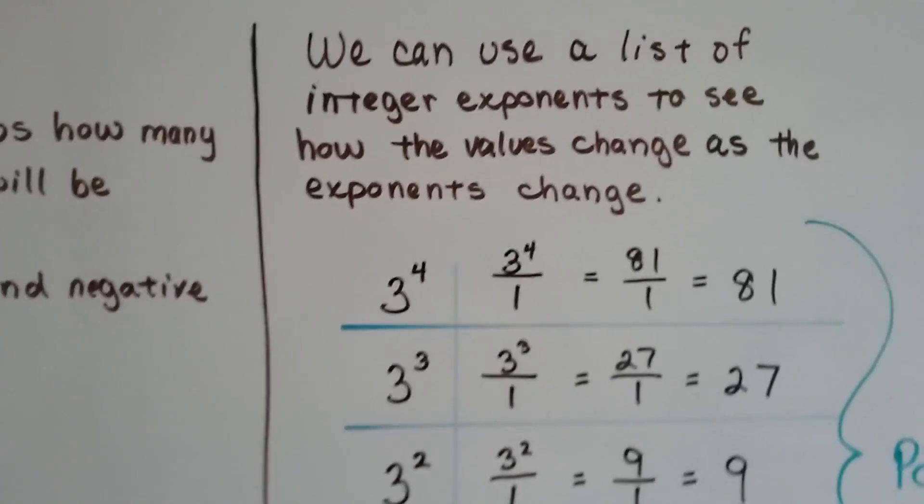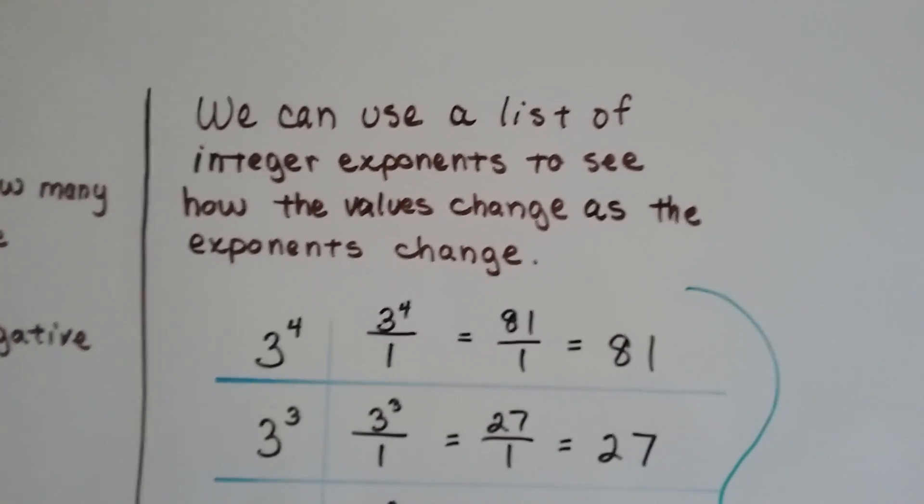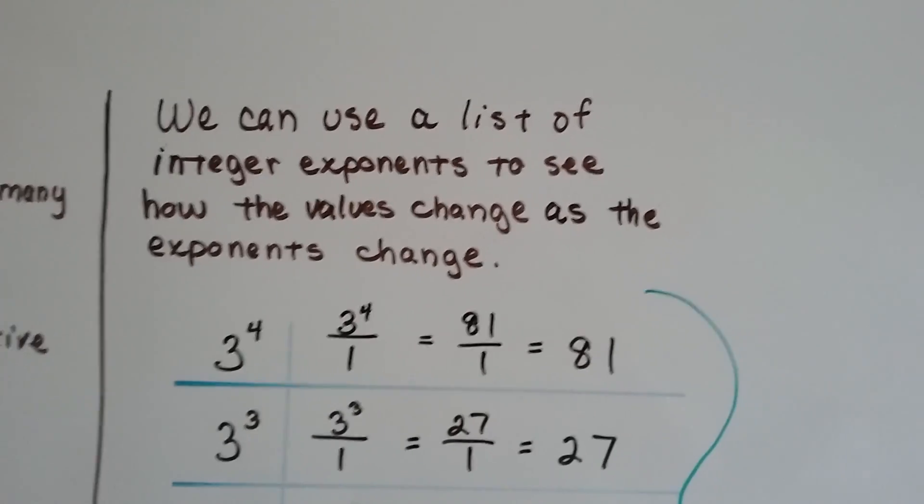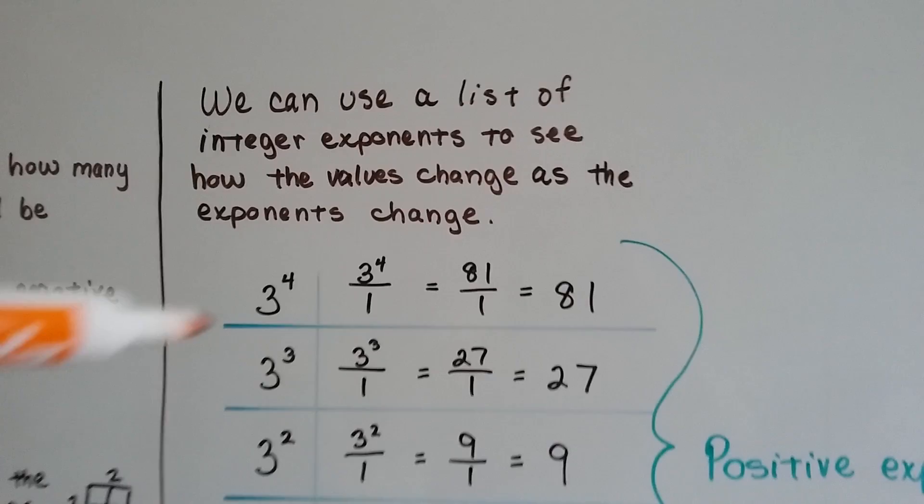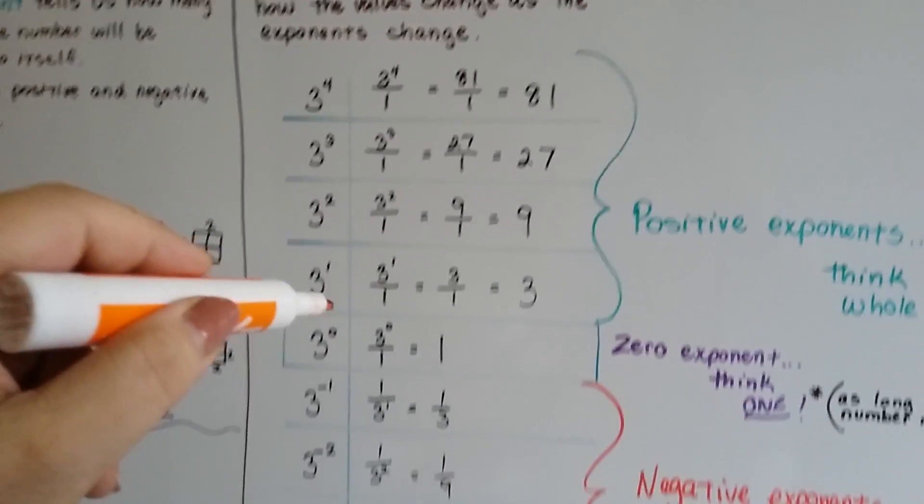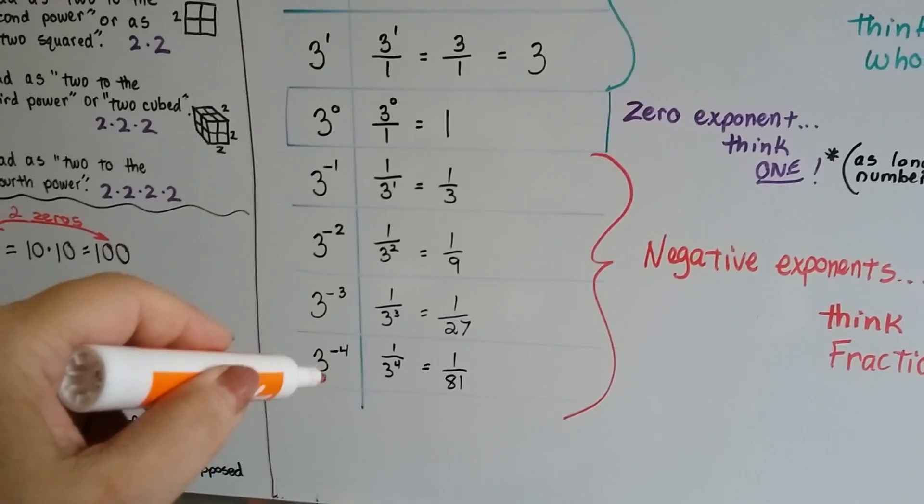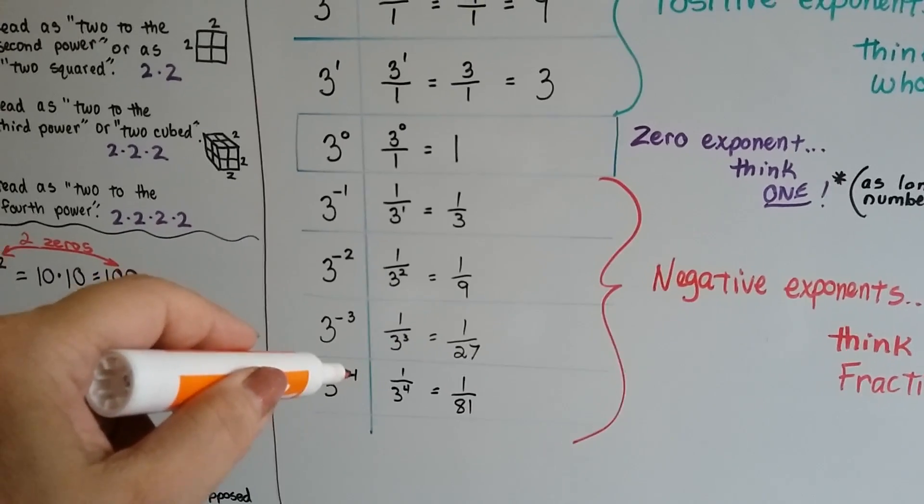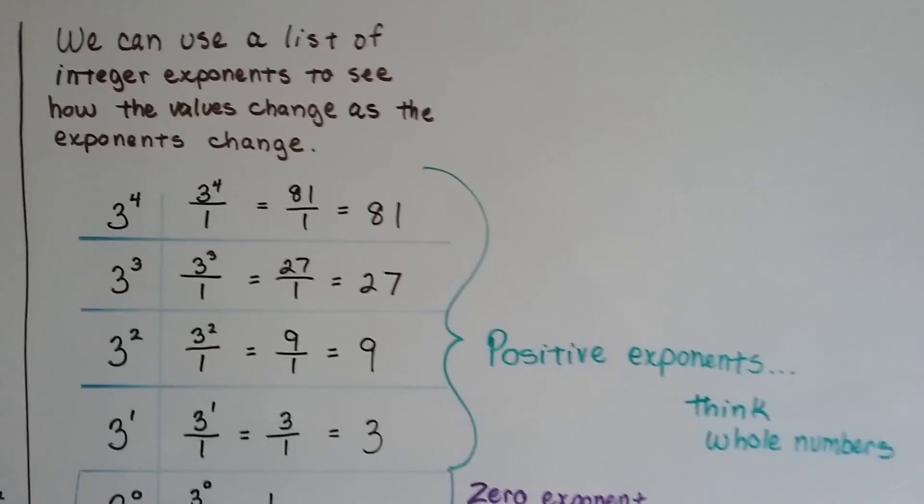Now, we can use a list of integer exponents to see how the values change as the exponents change. I made a list starting up here with 3 to the fourth power, and it went down in order all the way to 3 to the negative fourth power. We're going to watch how these change.